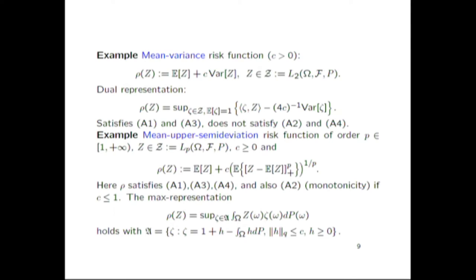Another large class of examples: these are one-sided measures. When I minimize something, it's okay if the realization is smaller than average. If I maximize my profit and it's much bigger than average, I'm happy. I don't want to lose too much — I don't want the realization to be much worse than expected. Variance penalizes deviations symmetrically, which is not natural. These one-sided measures are coherent for C between 0 and 1, and it's possible to write their dual representation.